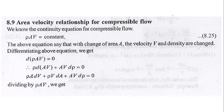We know that the continuity equation for compressible flow is ρ·A·V = constant. This equation can be differentiated. We get the differentiation of ρ·A·V, splitting it into terms — call this term one, and the second term is further divided into third and fourth parts.